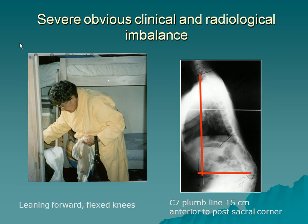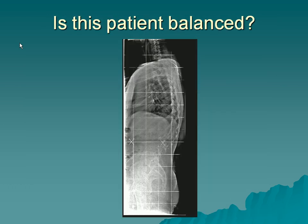This obvious case — from an analytical point of view, anyone could say this patient is in sagittal imbalance. The C7 plumb line is way out in front; you just have to look at the patient, you don't really need measurements. But what about this next patient — is this patient balanced?